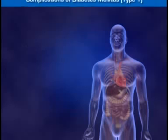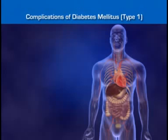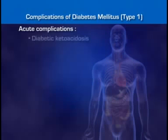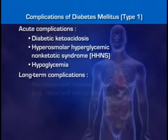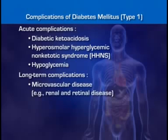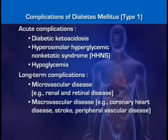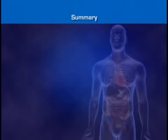Complications of diabetes mellitus include serious acute and long-term conditions, each with its own complex pathophysiology. The most important acute complications are diabetic ketoacidosis, hyperosmolar hyperglycemic non-ketotic syndrome, and hypoglycemia. The long-term complications involve microvascular diseases such as renal and retinal disease, macrovascular disease such as coronary heart disease, stroke, and peripheral vascular disease, and neuropathies.